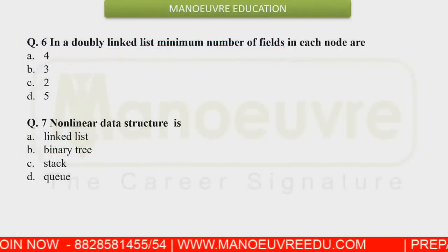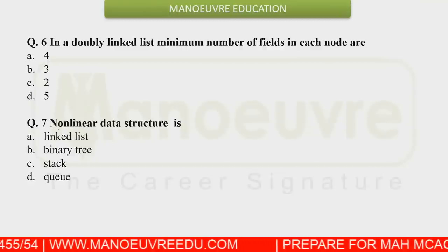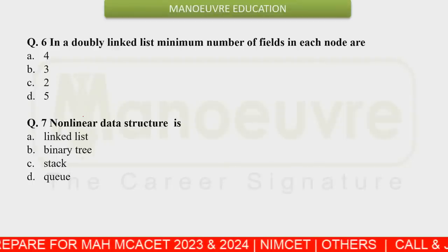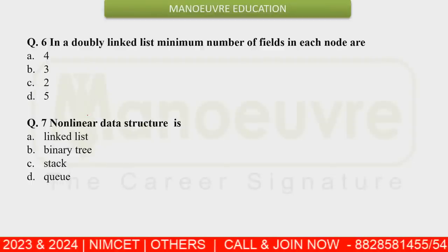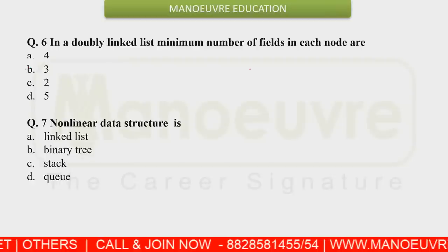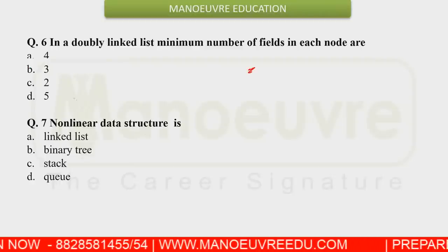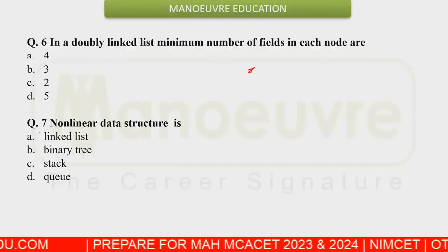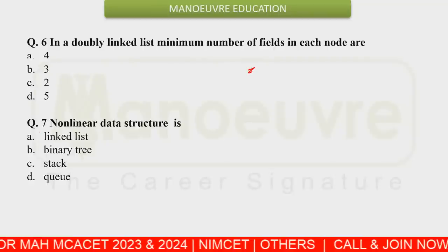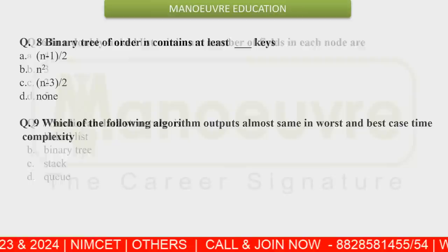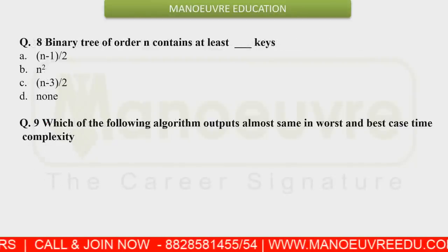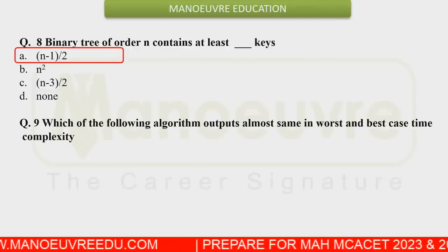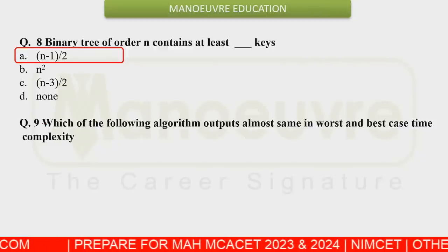The next question was about a doubly linked list. You were asked how many mandatory fields each node in a doubly linked list contains. We know that every doubly linked list node has at least three fields, so the right answer is option B (three). For non-linear data structures, binary tree is the answer — linked lists, stacks, and queues are all linear. For an n-order binary tree, the number of keys is (n minus 1) divided by 2, so the right answer is option 1.